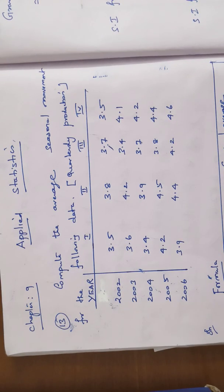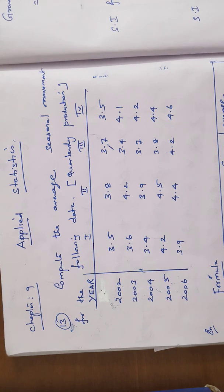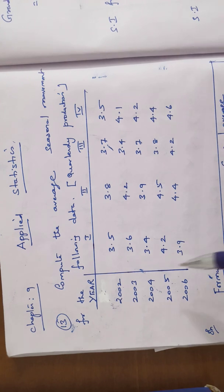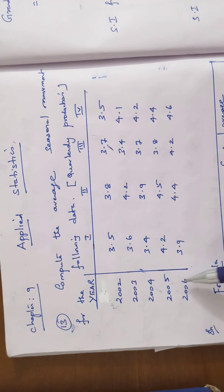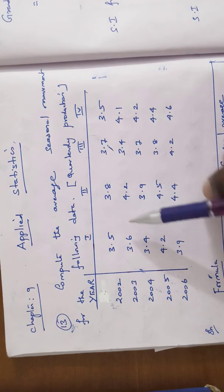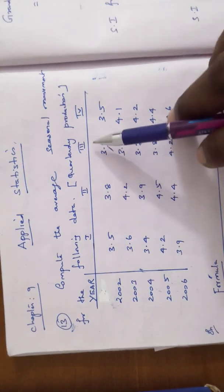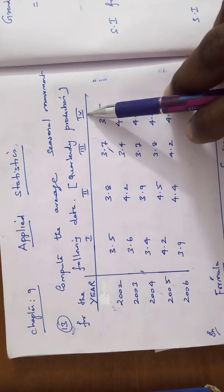Year is taken in column wise and quarterly entries are taken in row wise. Column entries are 2002, 2003, 2004, 2005 and 2006 and the four quarterly values.